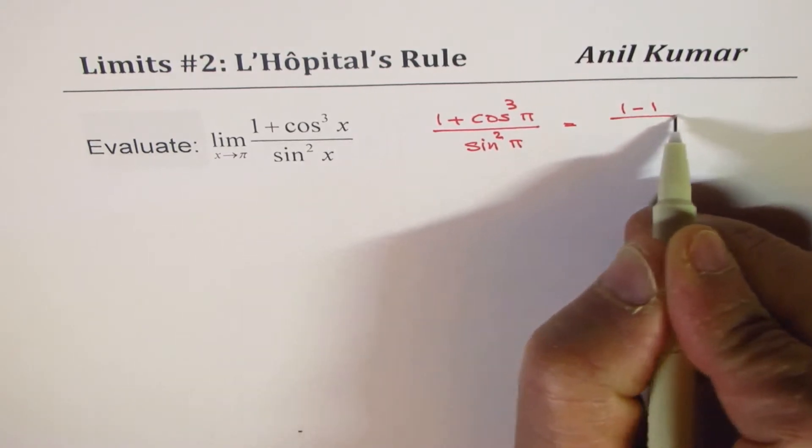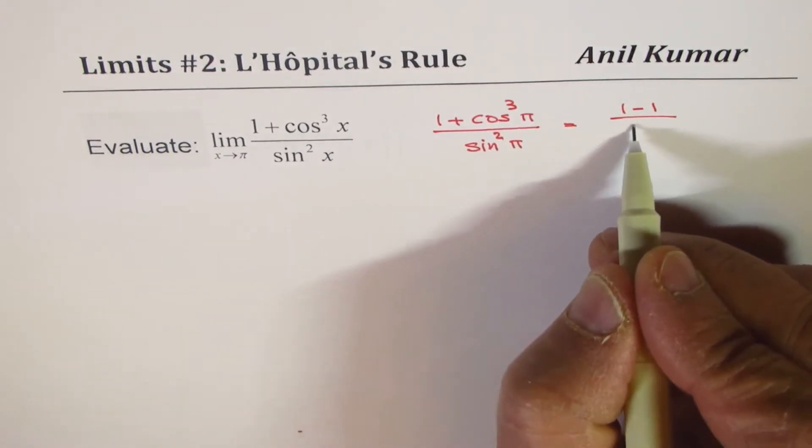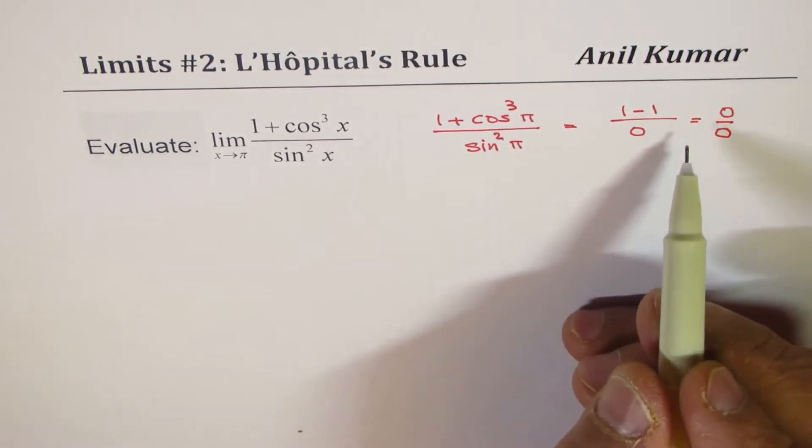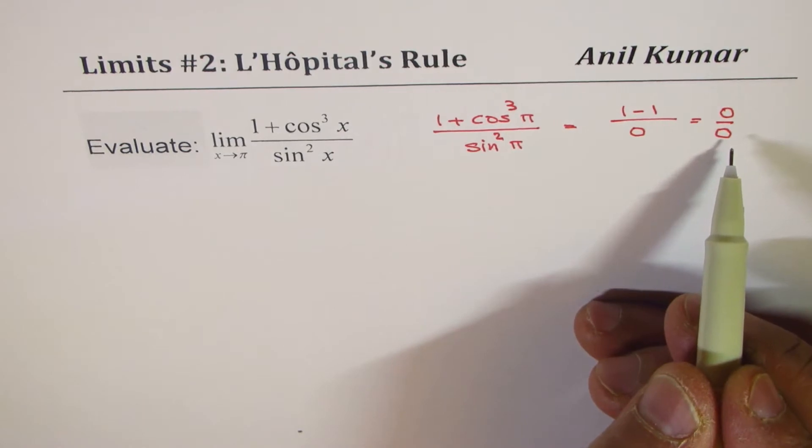And sin²π is 0, so we get 0/0. Surely it is in indeterminate form.